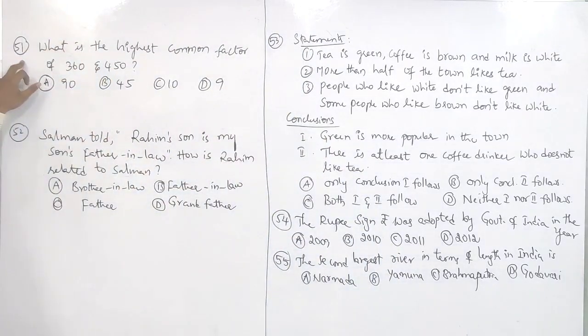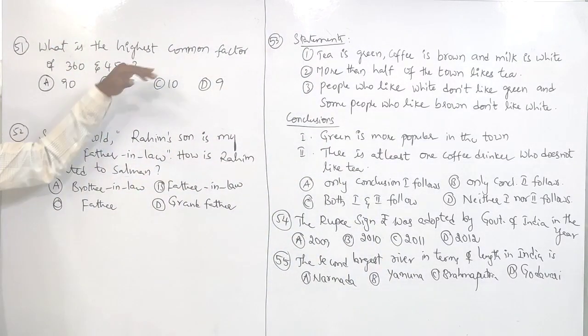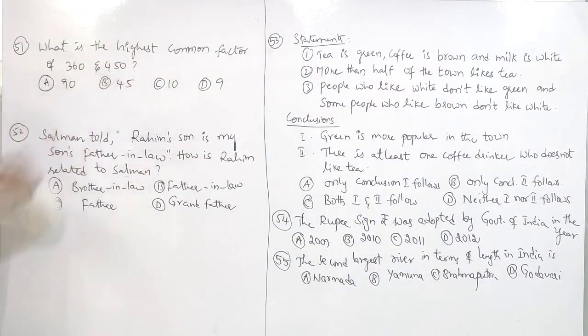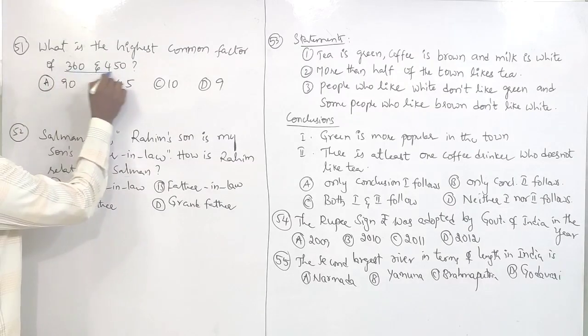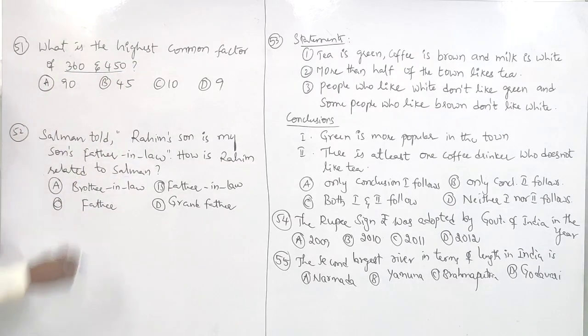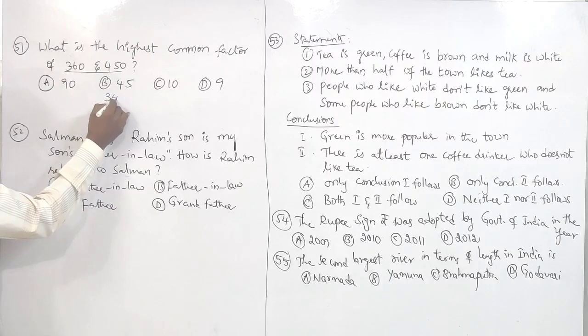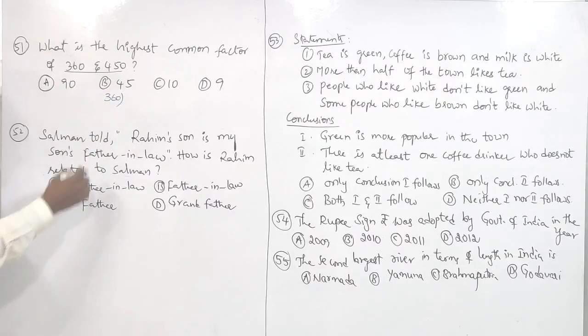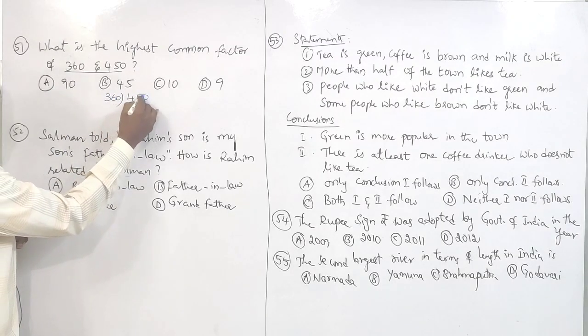Question number 51 is related to arithmetic — highest common factor. So how to find out the highest common factor of two numbers? The first number is 360 and the second number is 450.